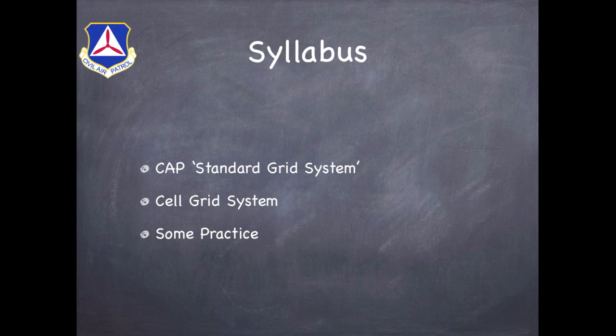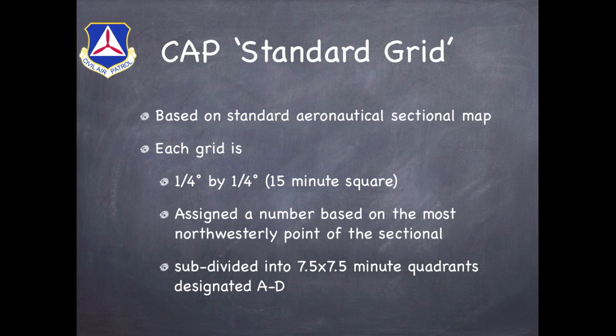We're also going to do some practice problems at the very end of this video so that you guys can see the differences between the two. We're going to start with a discussion on the CAPS standard grid system, which was developed back in the 1960s and is based on a standard aeronautical sectional. In it, each grid is one-quarter degree by one-quarter degree, or a 15-minute square, and is assigned a number based on the northwesterly most point available in that sectional.